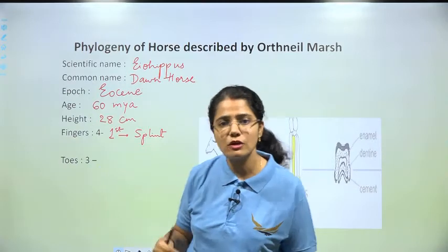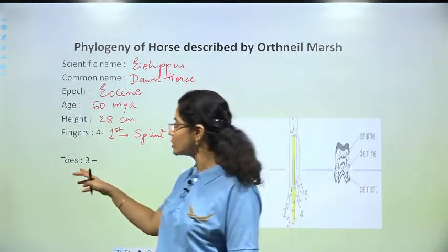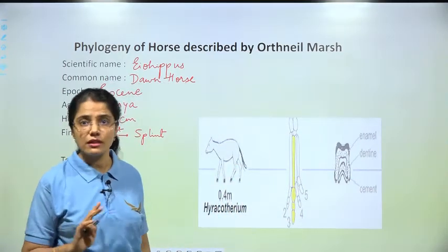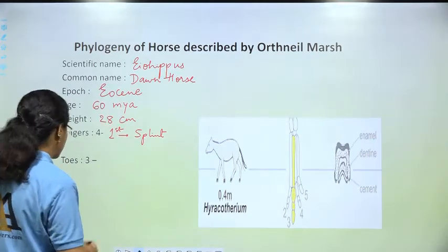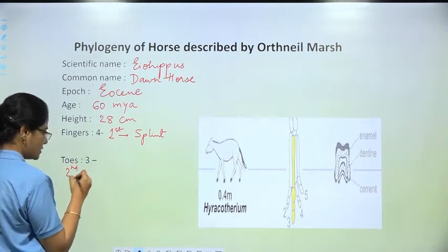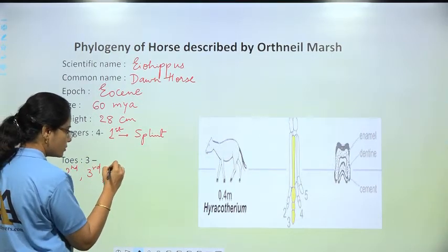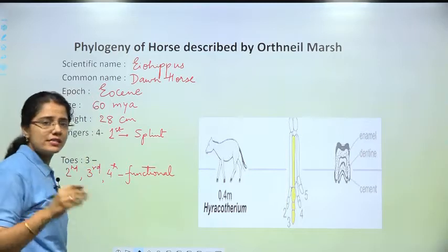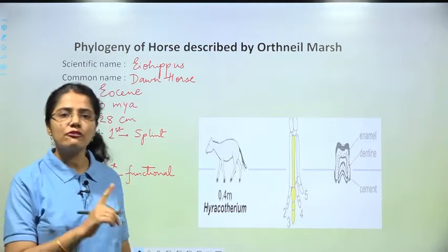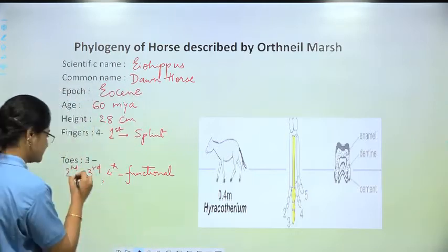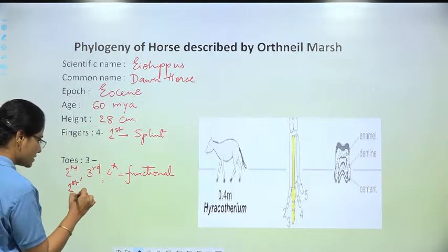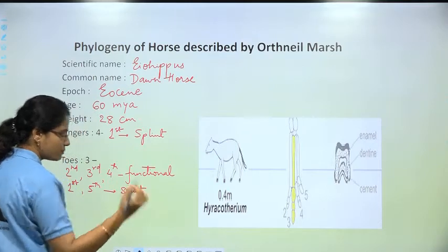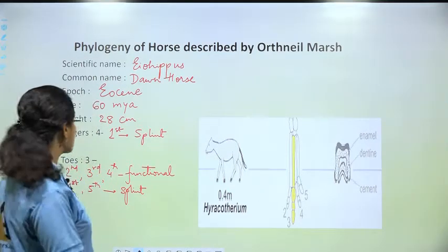Coming to the toes — the hind limb — it had three toes. The second, third, and fourth were functional. The first and fifth were splint.